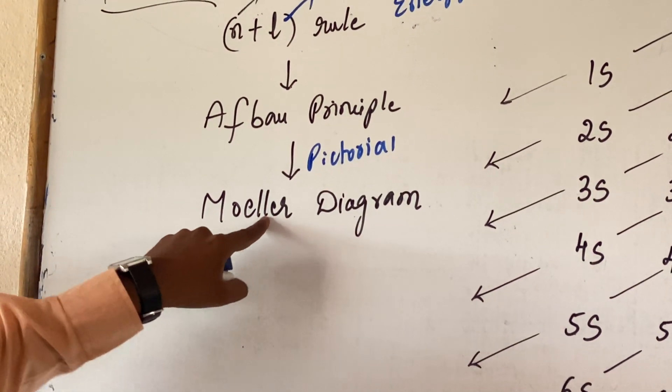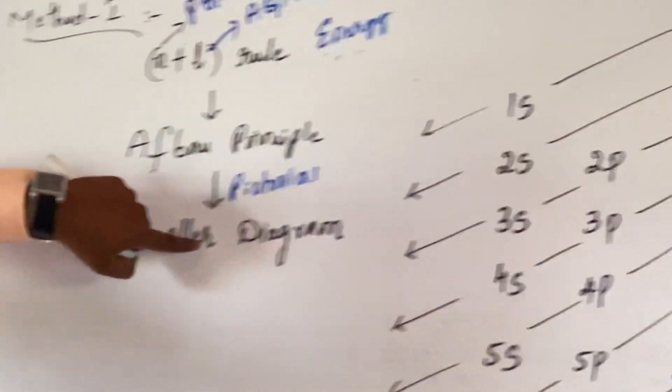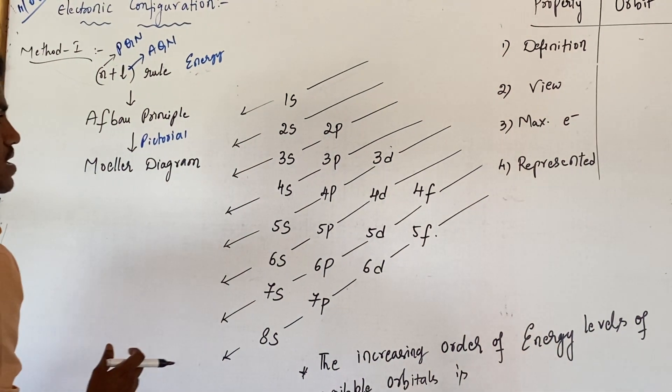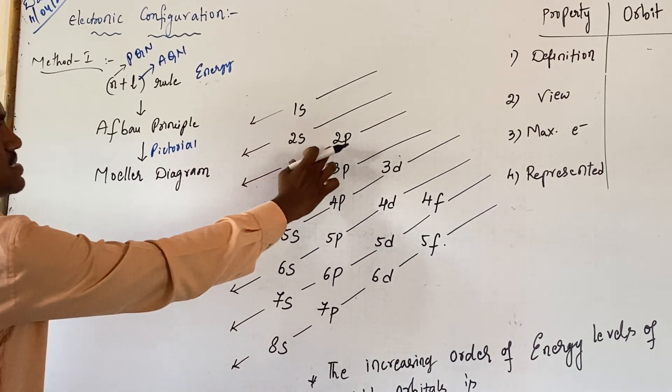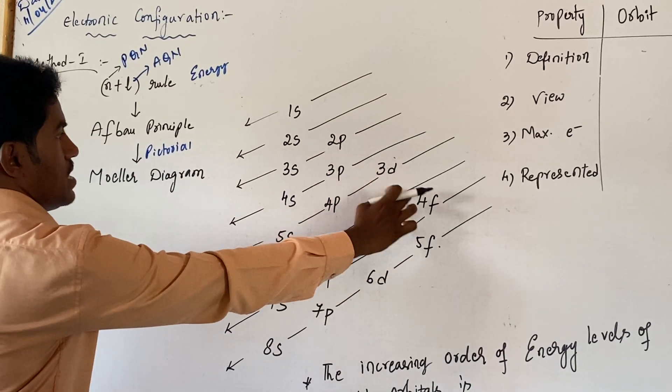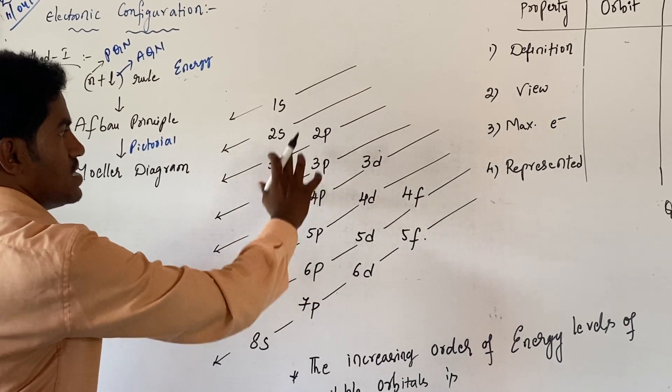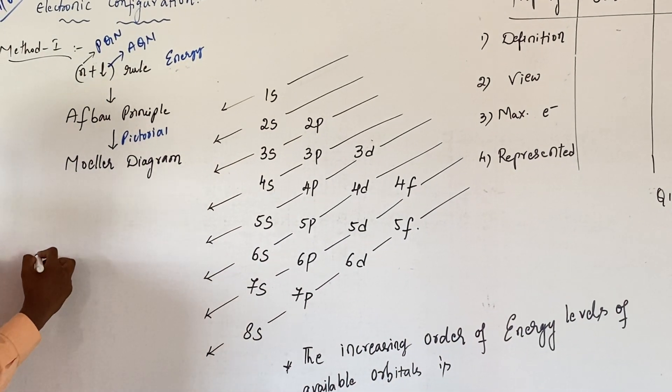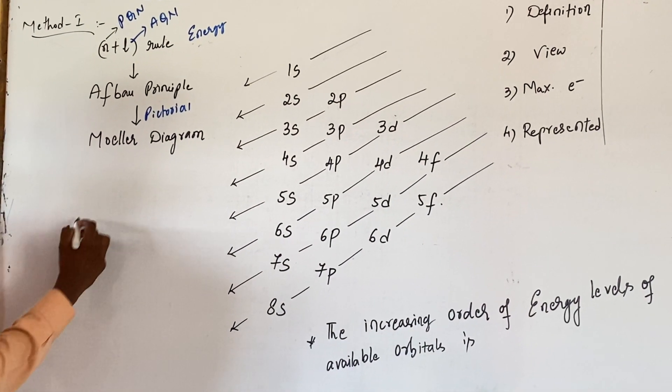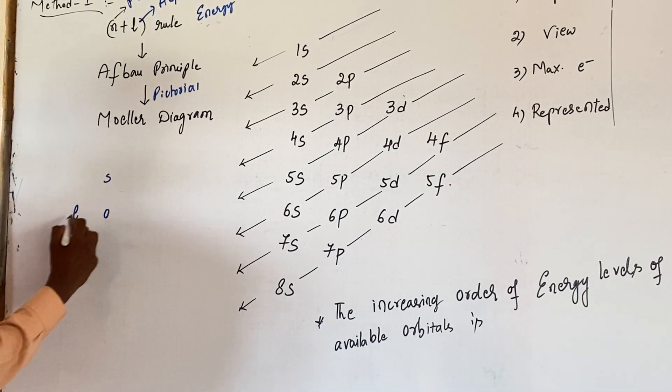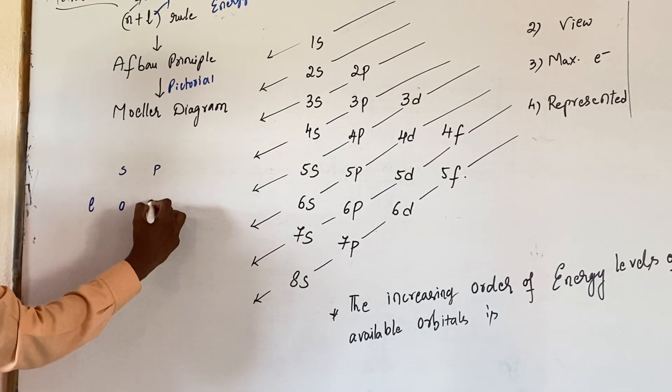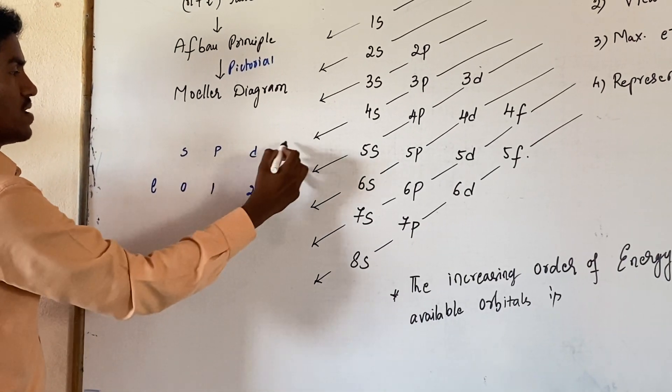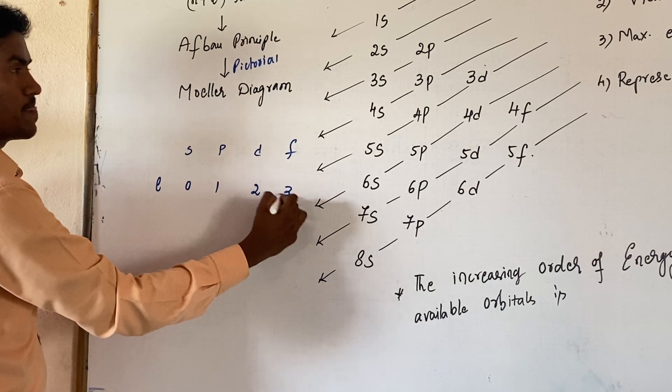The Moeller diagram can be given as like this. And the numbers represent orbit number and the letters S, P, D, F. These are all orbitals. Now orbitals, that can have L-value. L-value of S orbital is 0. L-value for P orbital is 1. And for D, L-value is 2. For F, L-value is 3.